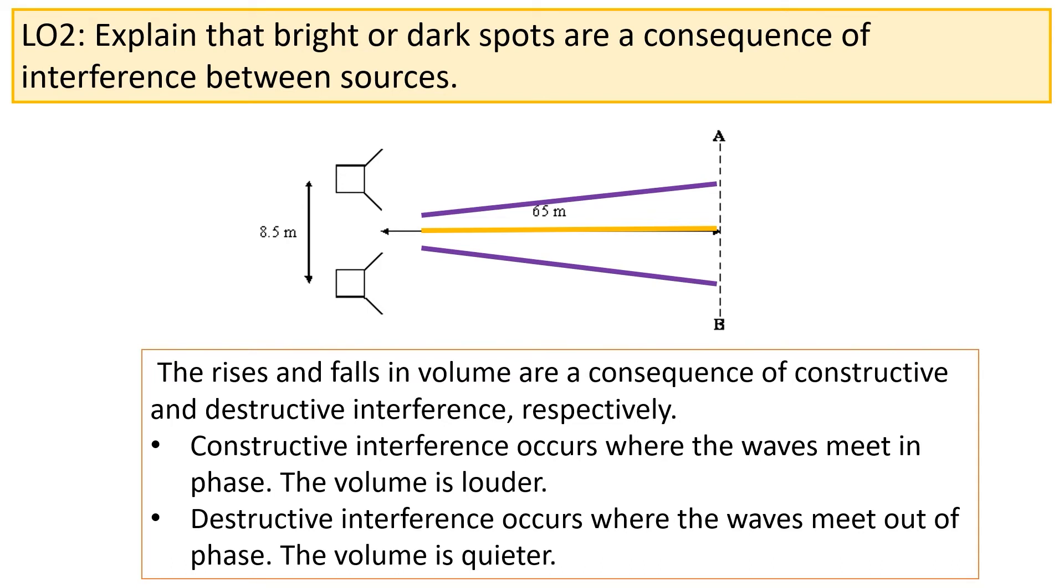What would happen is the volume would go between increasing and decreasing as you move between A and B. That's because at some points you would get constructive interference where the waves meet in phase, and at these points the volume would be louder, whereas at other points you would get destructive interference where the waves meet out of phase and the volume would be quieter.